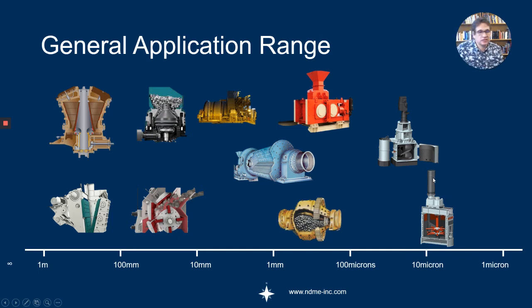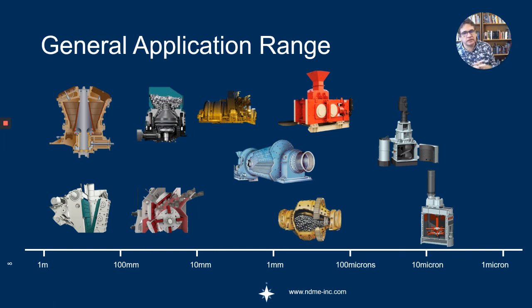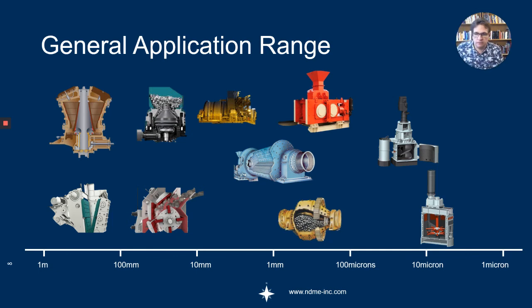So that's basically it — this gives you an idea of the broad range of comminution devices. I will be going into more detail in later videos on crushers and mills, and how they fit into flow sheets in a generic fashion. Thank you.